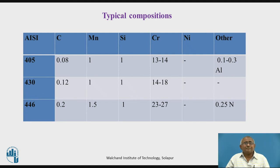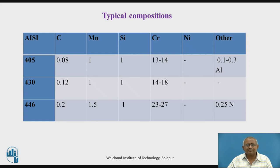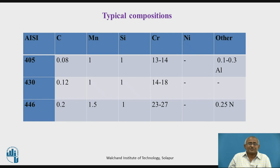Looking at the typical composition of ferritic stainless steel, the AISI 405 variety has a carbon content of 0.08 percent, contains some manganese and silicon, and chromium content is around 14 percent. In the AISI 430 steel, carbon content increases slightly and chromium content has also increased. In the AISI 446 variety, carbon content is 0.2 percent, manganese content is slightly higher, chromium content is 23 to 27 percent, and a small amount of nitrogen is also present. This 446 steel will have better corrosion resistance compared to the 430 and 405 varieties.